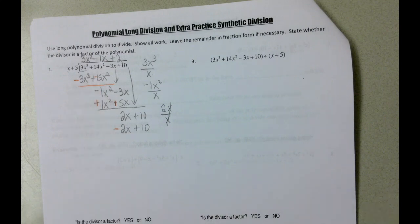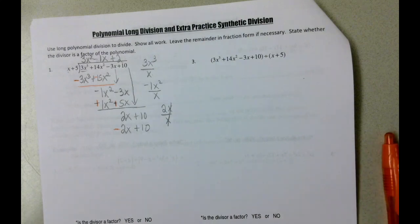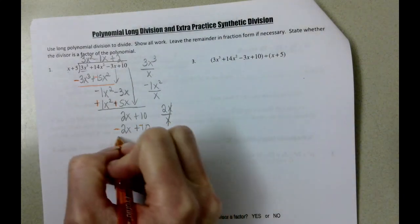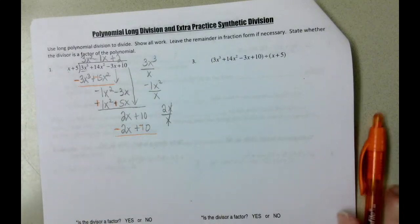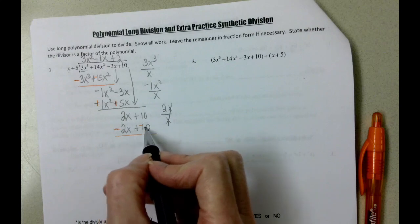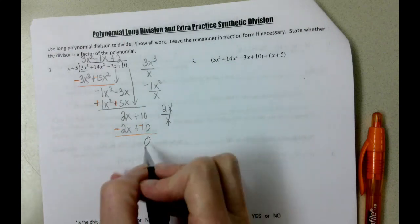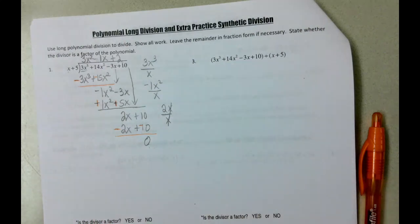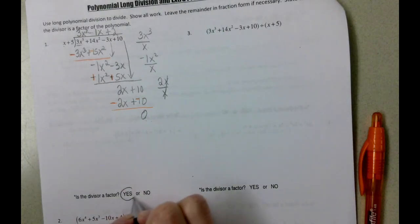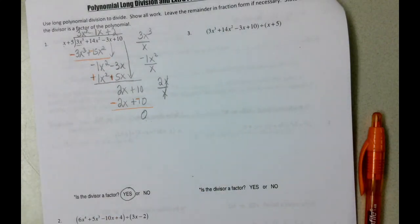Super sorry. I don't know what happened to my computer, but it just did something wacky. We change both sides. And what we're left with here, 2x times 2x is 0, 10 plus a negative 10 is still 0. So we ended up with 0, and what that means is that x plus 5 is a factor.